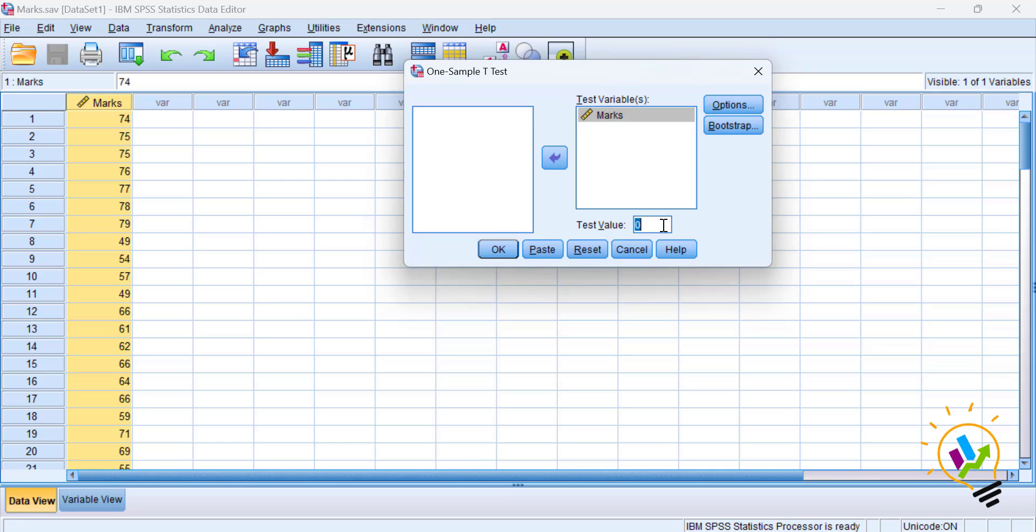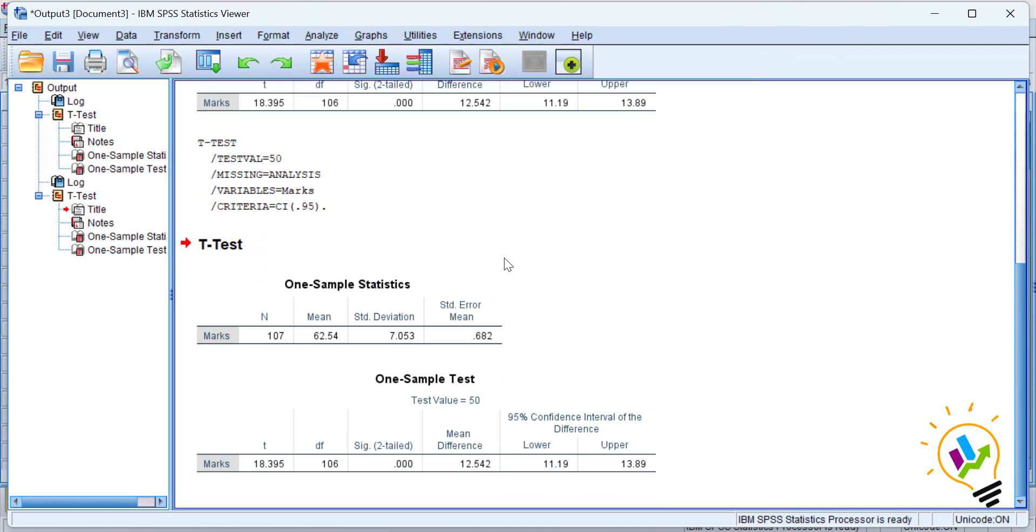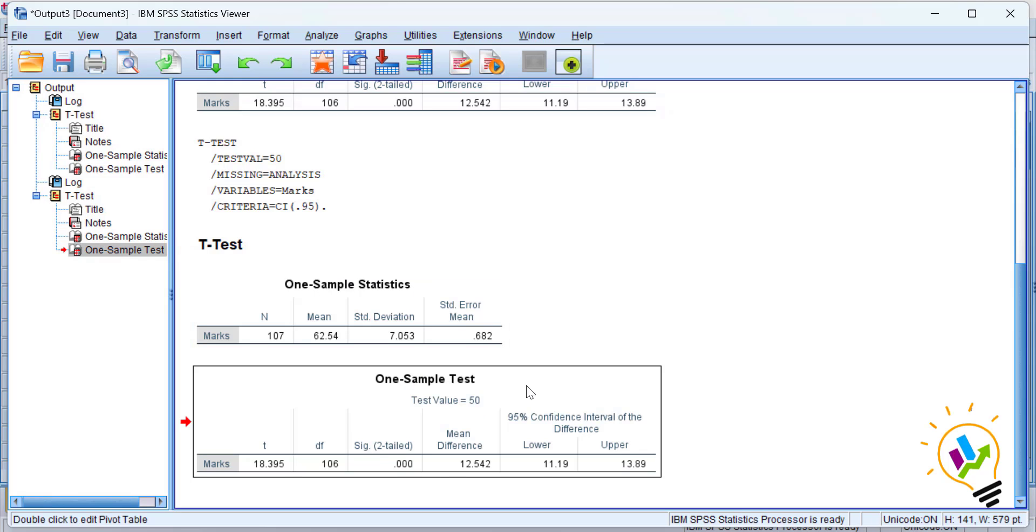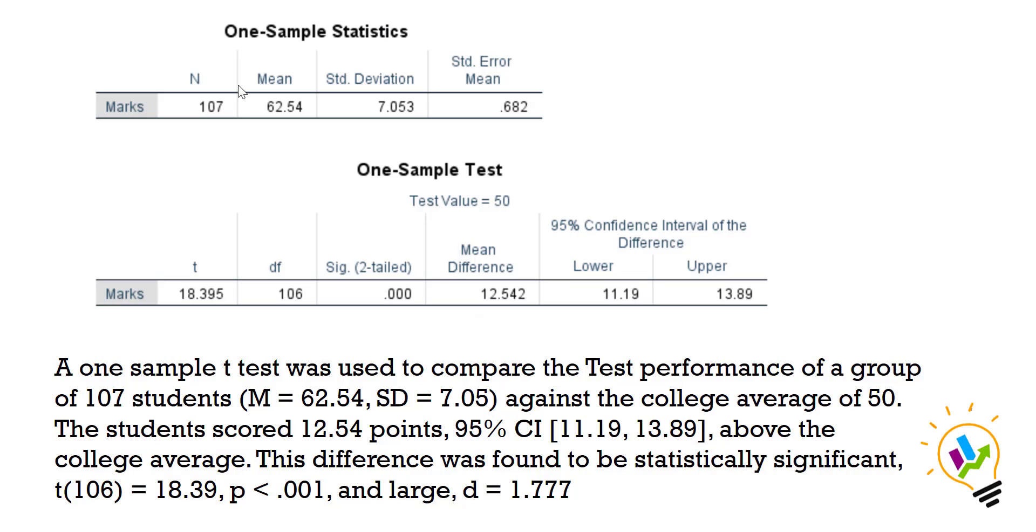Test value is 50, click OK. Now we have the one-sample statistics and one-sample test values. We'll use this mean value, which is the sample mean of 62.54, standard deviation is 7.053. The test value is 50, t-value is 18.395, degrees of freedom is 106, and significance is 0.000.